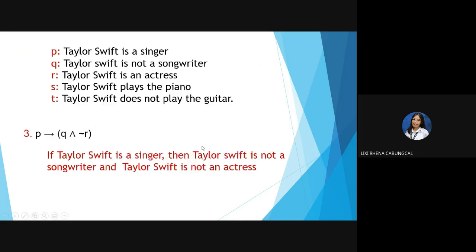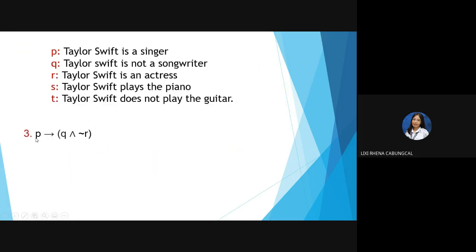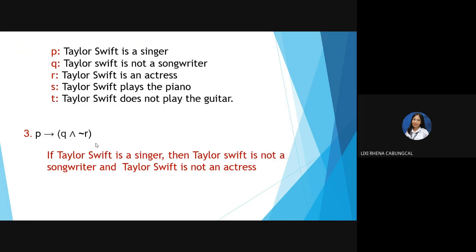Number 3: If P, then Q ∧ NOT R. Answer: 'If Taylor Swift is a singer, then Taylor Swift is not a songwriter and Taylor Swift is not an actress.' We added NOT because it is the negation of R.